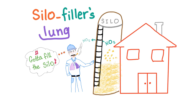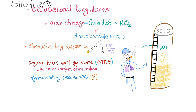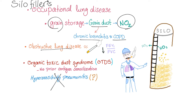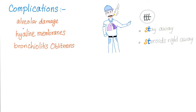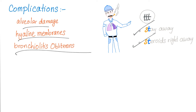Let's review silo filler's lung, which is not a hypersensitivity pneumonitis. It's related to exposure to nitrogen dioxide in the silo. When you store grains, you get grain dust containing nitrogen dioxide, leading to chronic bronchiolitis and COPD — an obstructive lung disease, or it could be restrictive. It's classified as an organic toxic dust syndrome. Pathologically, silo filler's lung causes alveolar damage, hyaline membranes, bronchiolitis obliterans. Treatment: stay away from the silo, and start steroids right away.